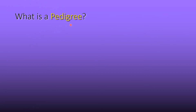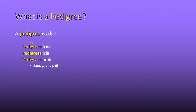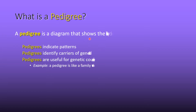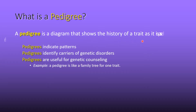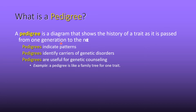What is a pedigree? A pedigree is a diagram that shows the history of a trait as it is passed from one generation to another. A pedigree indicates patterns and identifies carriers of genetic disorders. Pedigrees are useful for genetic counseling. A pedigree is like a family tree for one trait.